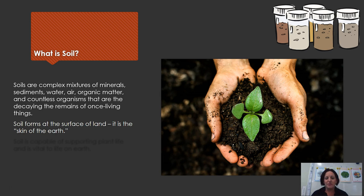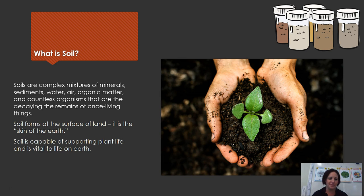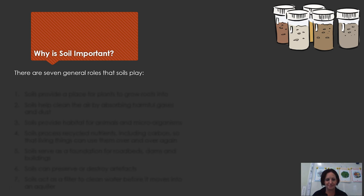Soil forms at the surface of the land and it's kind of like the skin of the earth — it's on top of the rocky layer. It's capable of supporting plant life and is vital to all life on earth. So why is it so important? Well, it's very important because it has seven general roles that it plays on the planet.